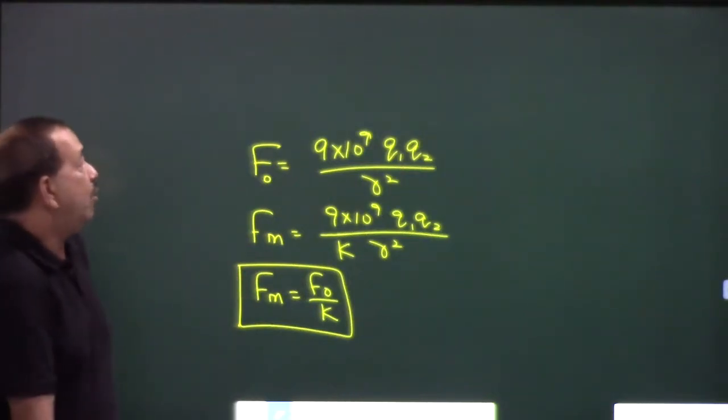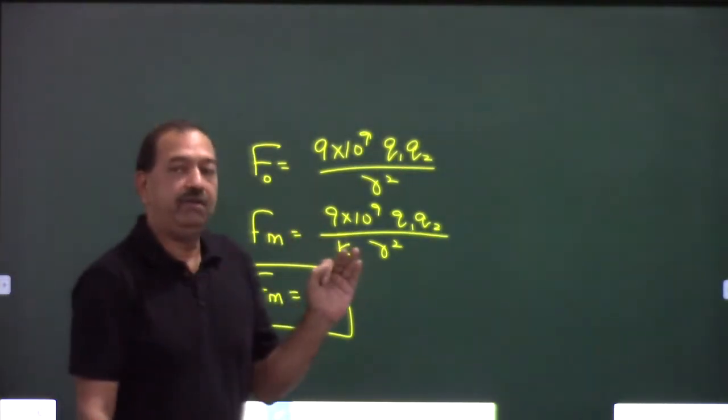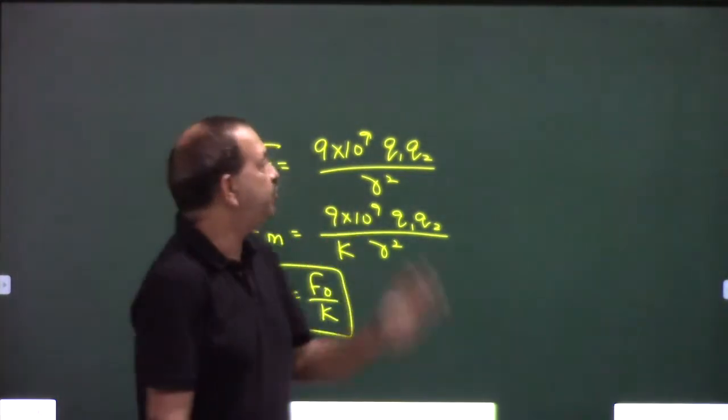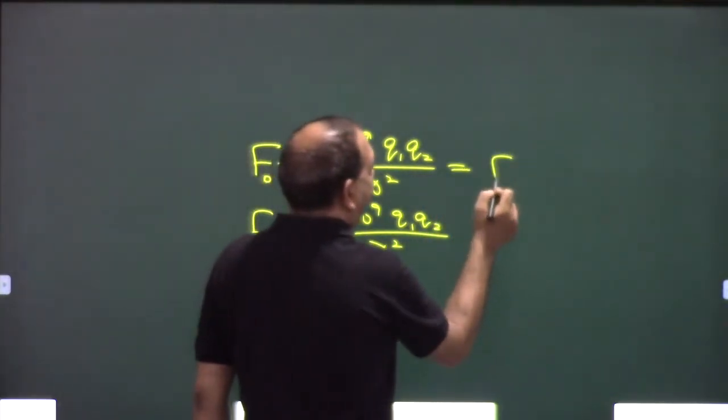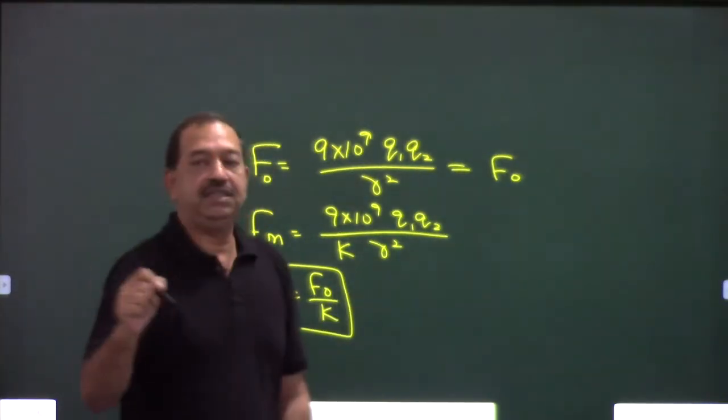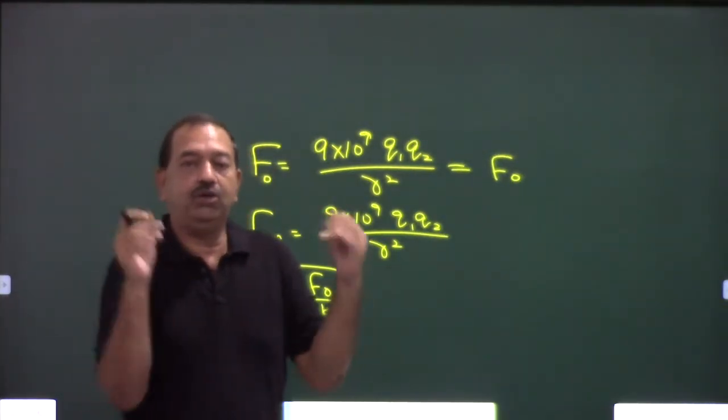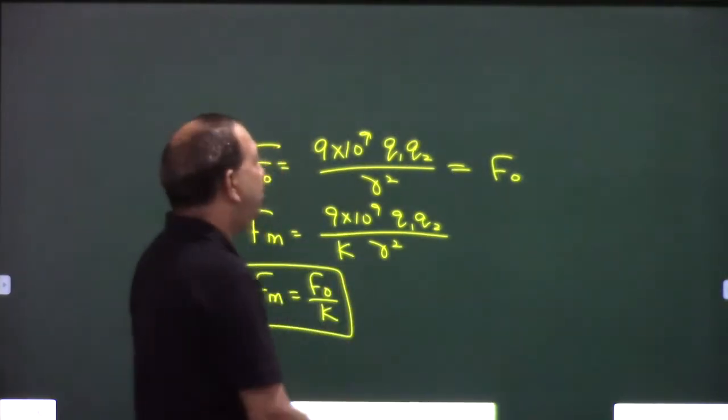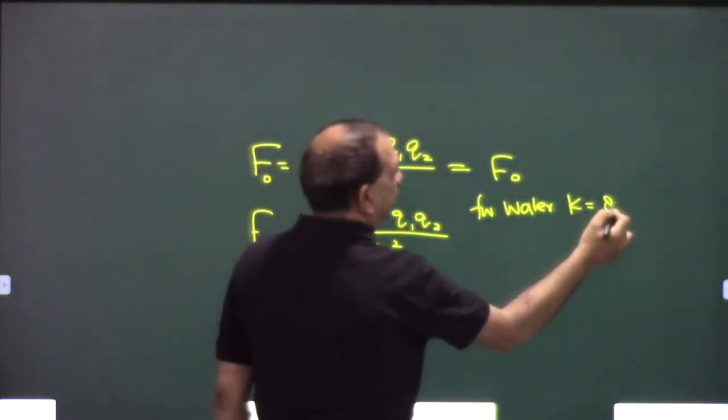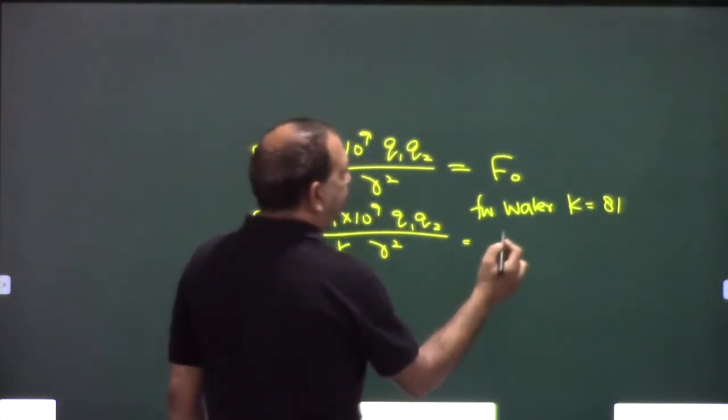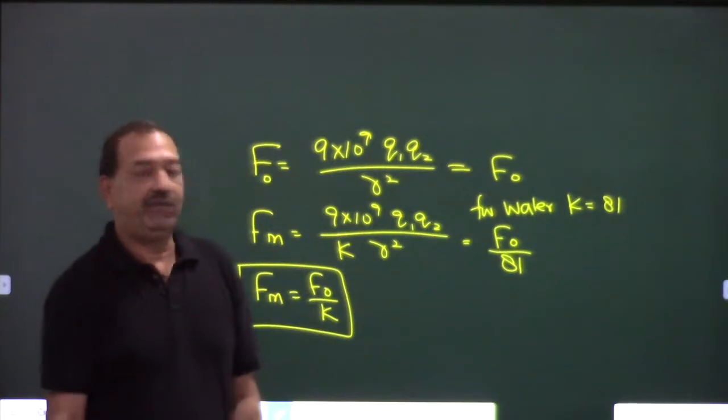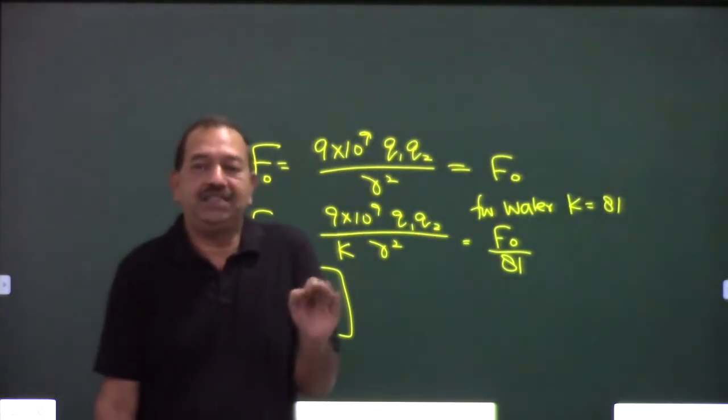Right, now if I say for certain combination, koi bhi do charge hai aur unke bich mein kuch force hai, let's say this force is F naught. And I put those charges in water at the same distance. Agar mein un charges ko paani mein place kar dhu, for water k is equal to 81, so then force in medium will become F naught by 81.